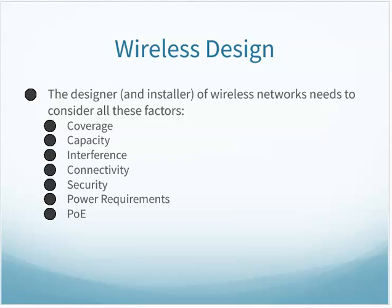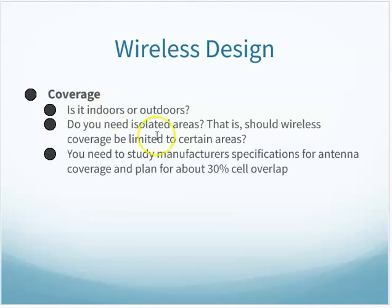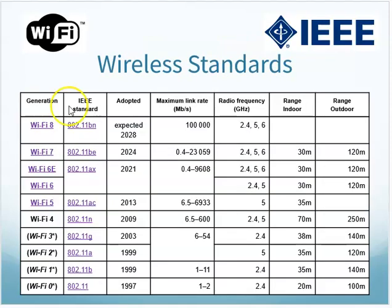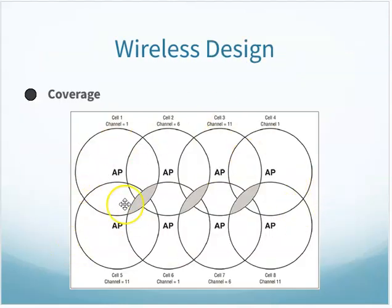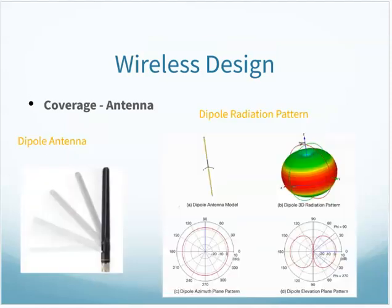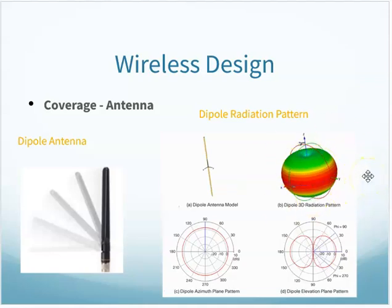Designers and installers of wireless networks need to think about several factors. First, coverage — make sure access points cover the area and consider how much they're overlapping. Also think about your APs and overlapping channels. The type of antenna built into the access point can affect the coverage area. This dipole antenna, common on many access points, has a radiation pattern that looks almost like a squashed ball, showing the kind of area it will cover.